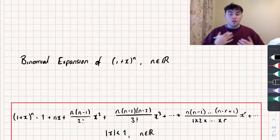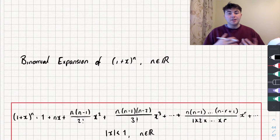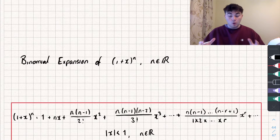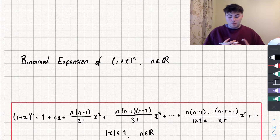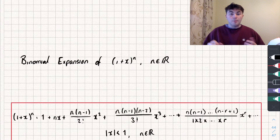In this video we're going to be taking a look at binomial expansions of the form (1 + x) to the power of n, where n is a real number. In the previous video we looked at what to do when n was a natural number, which is a positive whole number. In this one we're going to extend our idea so that n can be a fraction, a negative number, a decimal, or something like that — so we'll be able to expand things like that too.